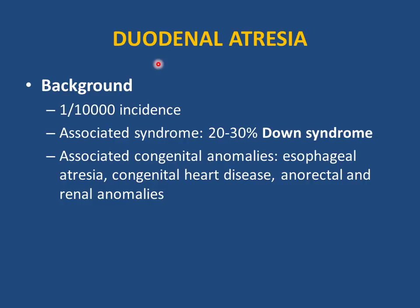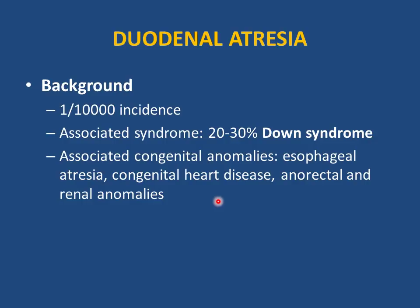Duodenal atresia is rare (1 in 10,000). It may be detected prenatally due to associated polyhydramnios and double bubble sign on ultrasound. It is associated with Down syndrome in 20-30% of cases, and also with esophageal atresia, congenital heart disease, anorectal and renal anomalies. Always search for other anomalies when duodenal atresia is found.